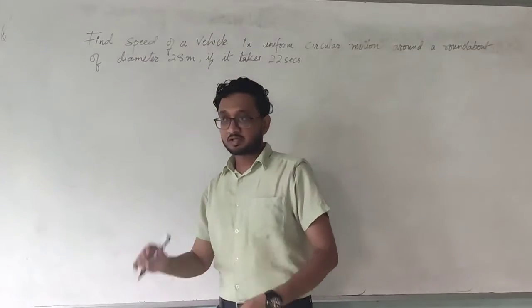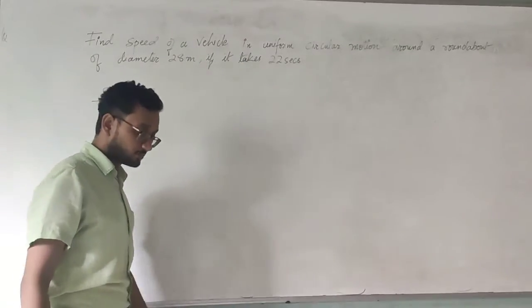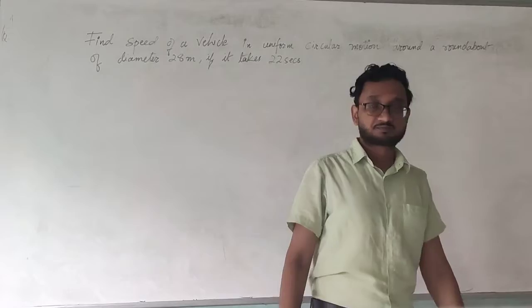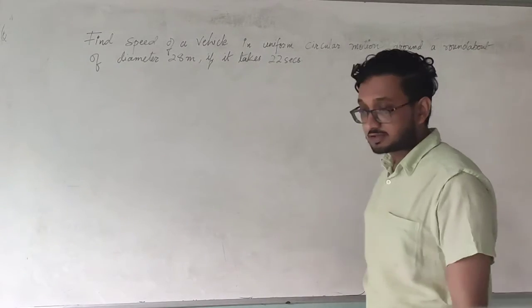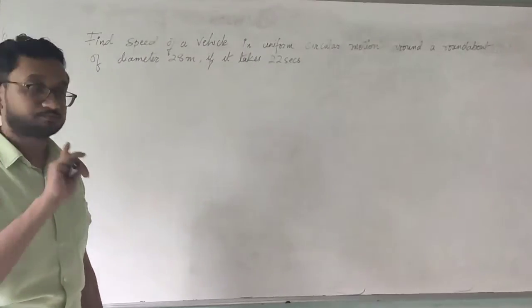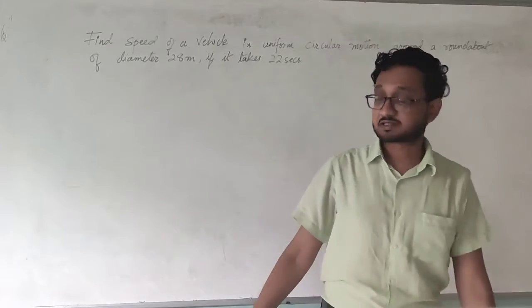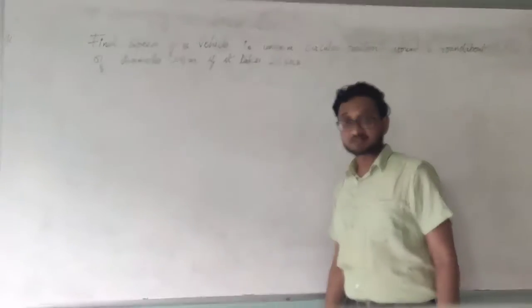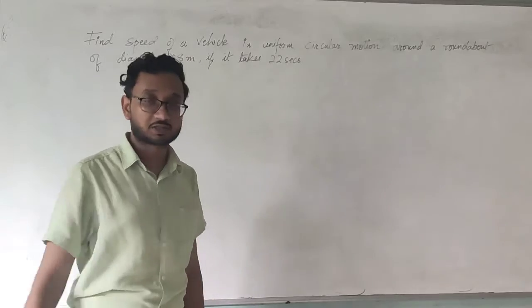Okay, so this numerical is once again regarding the uniform circular motion. An object or a vehicle is moving in a uniform circular motion around a column of diameter 28 meters and it is taking around 22 seconds to finish the full circle.